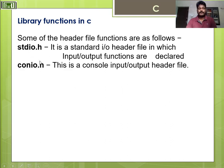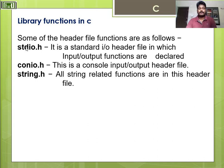Moving to the next header file, that is conio.h. This is a console input/output header file. Functions like getch and clrscr are all under the conio.h header file.